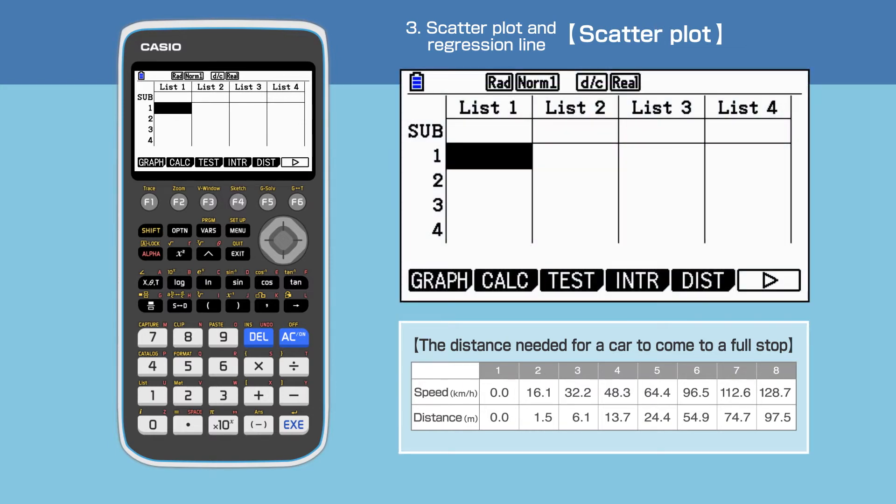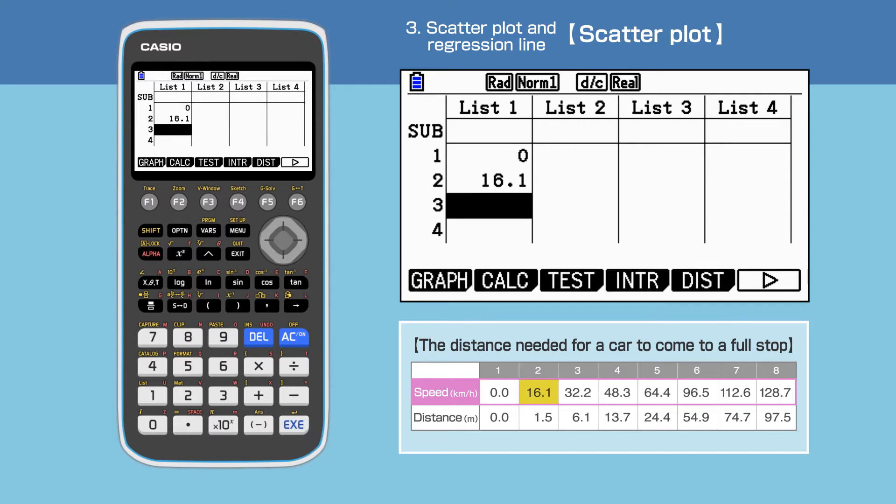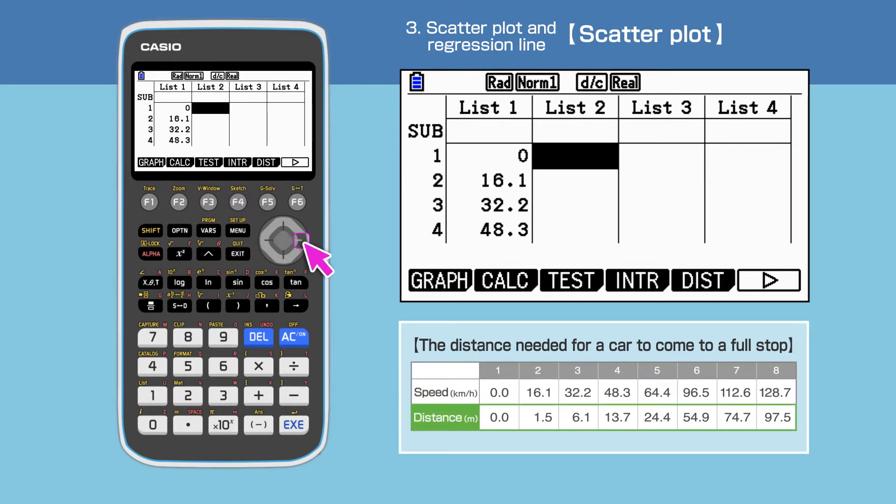Let's start entering the data. We will put the speed in list 1. The distance will go in list 2.